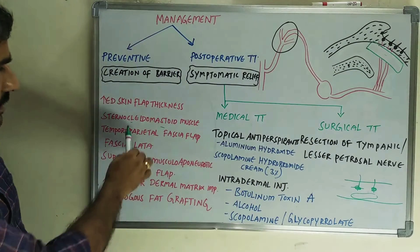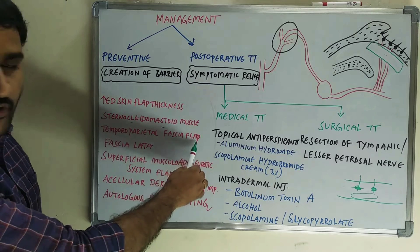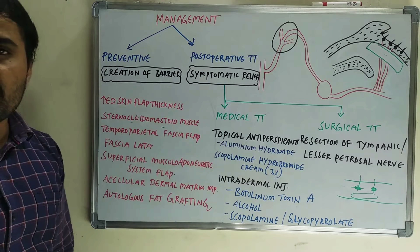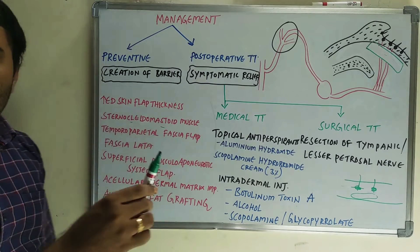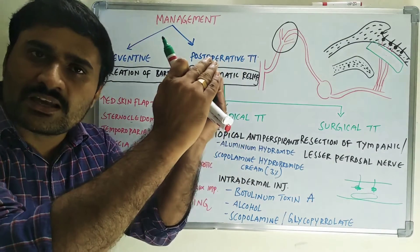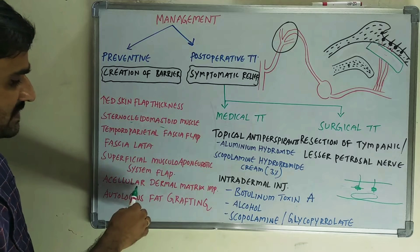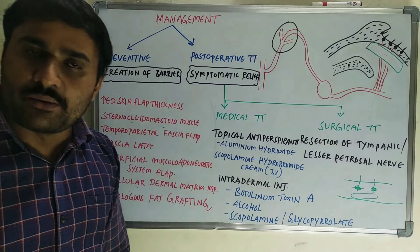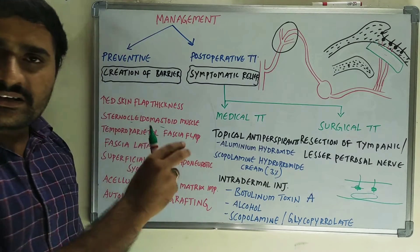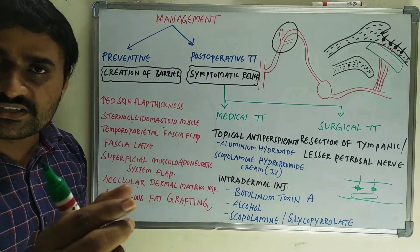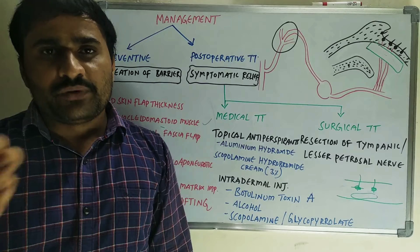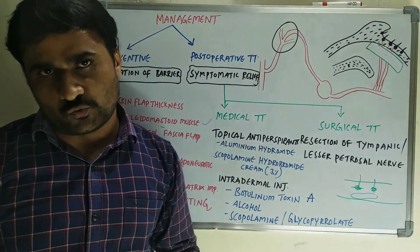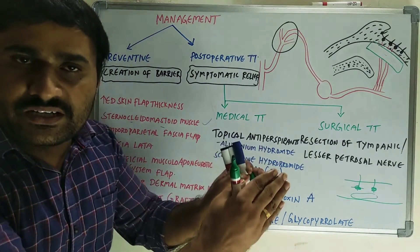Another option: you can place the sternocleidomastoid muscle, or temporoparietal fascia flap, or SMAS (superficial musculo-aponeurotic system) flap interposed between the cutaneous structure and post-ganglionic fibers. You can also use synthetic acellular dermal matrix implantation or autologous fat grafting from the abdomen. These fascia or muscles interposed between the cutaneous structures and post-ganglionic fibers are the preventive measures to prevent Frey's syndrome.